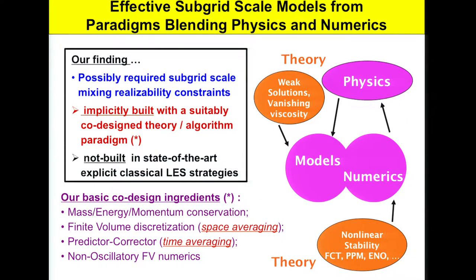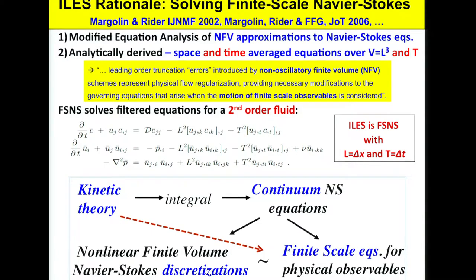When working with ILES, you're mixing theoretical results built into the models and the numerics, and may or may not get a better result. This seems to suggest that choosing a very good co-design — conservation equations, space averaging, time averaging — is crucial, along with a non-oscillatory numerical scheme ensuring positivity and the ability to capture shocks. This seems to be behind the good capturing of DNS results in the case of the ratio of Taylor microscales.